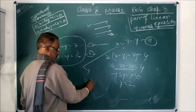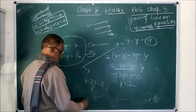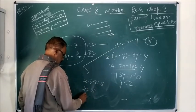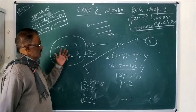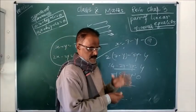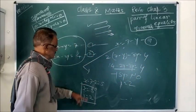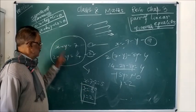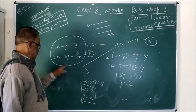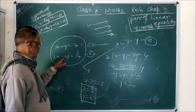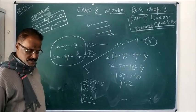So x = 5 and y = 2. These are the values found by the method of substitution. Now if you want to verify whether you are right or wrong, put these values in the equations. In equation 1: 5 + 2 = 7 — correct. In equation 2: 2 × 5 − 3 × 2 = 10 − 6 = 4 — satisfied, verified. So your answer is correct.